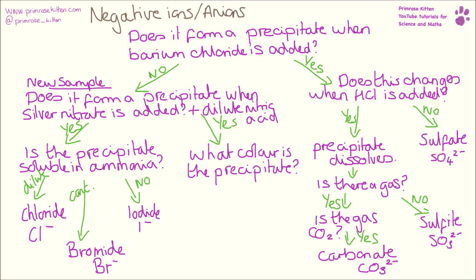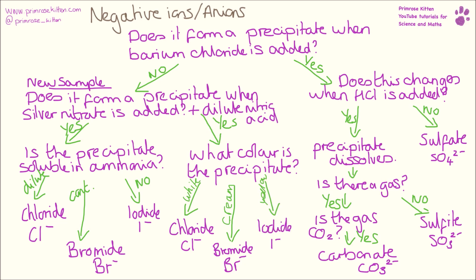If we add silver nitrate and dilute nitric acid — the nitric acid is there just to remove anything else that might confuse us with the colour — what colour is the precipitate that forms? A white precipitate is a chloride ion. A cream precipitate is a bromide ion. And a yellow precipitate is a bromide ion.